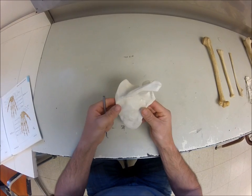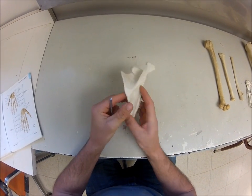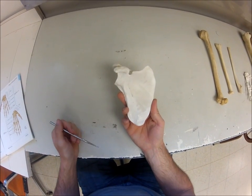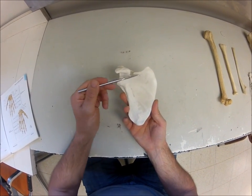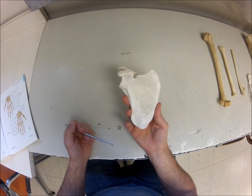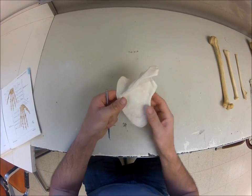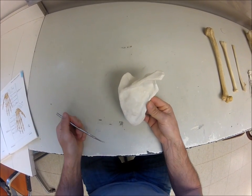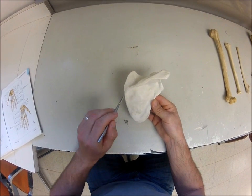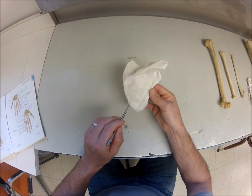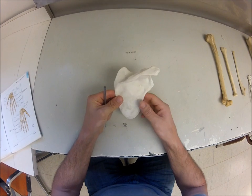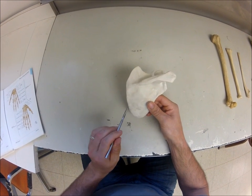Going above the spine, this area up here is called the supraspinous fossa. If we flip the scapula over so we're looking at the anterior side, then this entire surface here is the subscapular fossa. Going back over here, we want to look at the borders of the scapula — this here would be the medial border, and this here would be the lateral border.